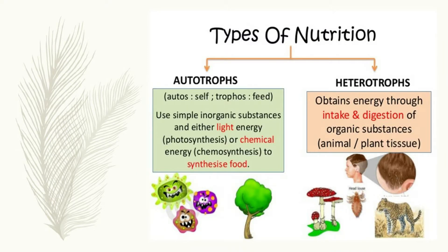According to the process of nutrition, living organisms are divided into two parts: autotrophs and heterotrophs. Autotroph is made up of two words — 'auto' means self and 'troph' means feed. Organisms that make their own food with the help of inorganic substances like water and carbon dioxide are called autotrophs. As green plants come under this category, plants are autotrophs.